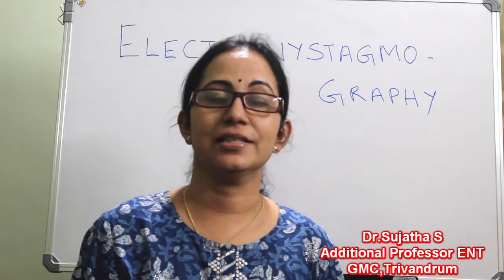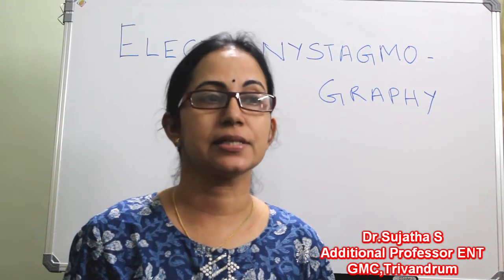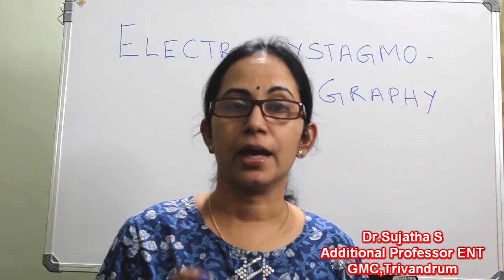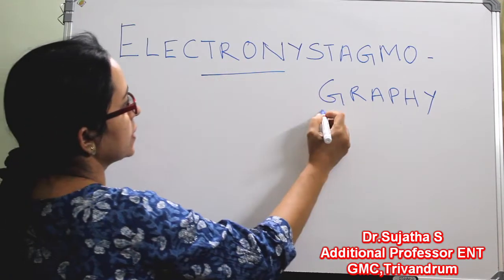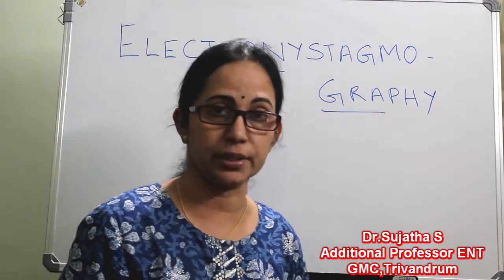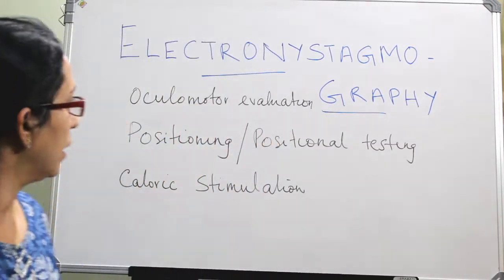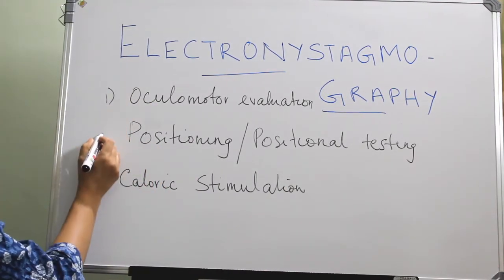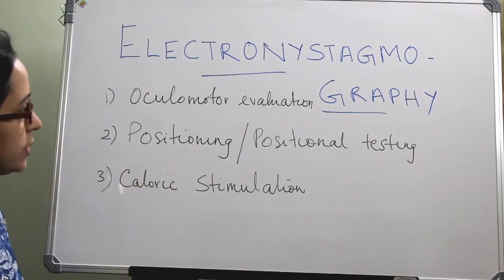Electronystagmography is an objective tool for the evaluation of patients suffering from dizziness, vertigo, or other balance disorders. The electronystagmogram works on the principle of a corneoretinal potential. A standard ENG test battery consists of three parts: oculomotor evaluation, positioning or positional testing, and caloric stimulation.